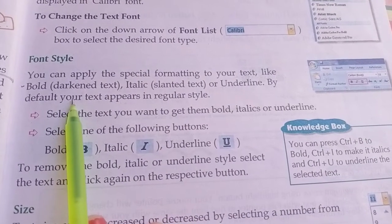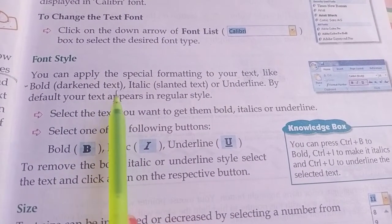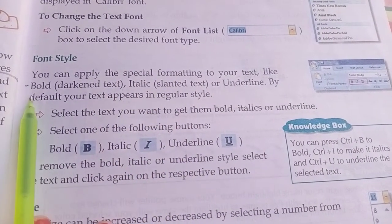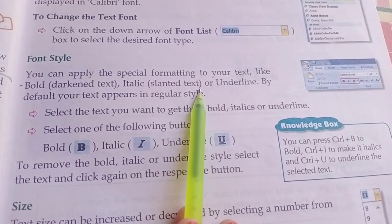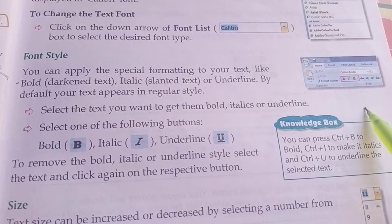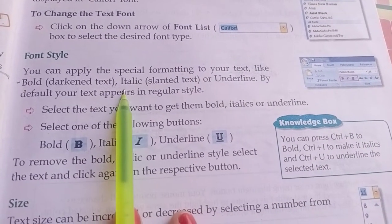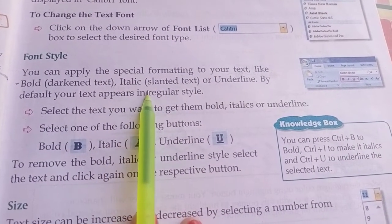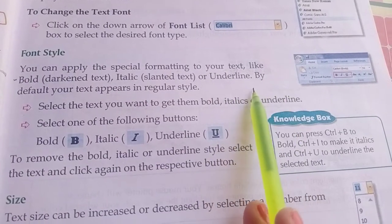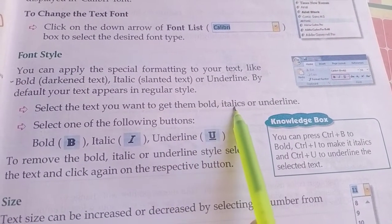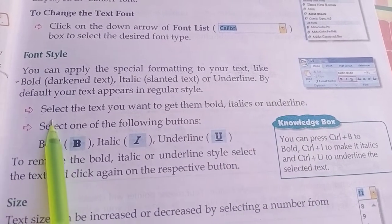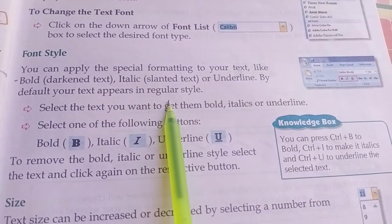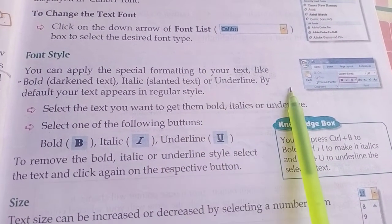Bold darkens the text, italic is slanted text, and underline. By default your text appears in regular style.